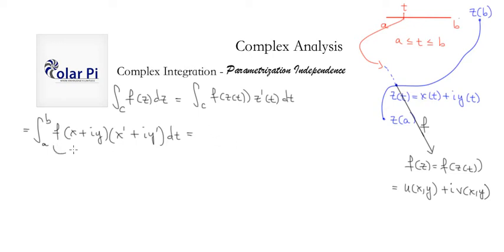Now, remember, f maps z of t, which is x plus i y, onto u of x y plus i times v of x y. So that's all to say that we could replace this with, we could replace f of x plus i y with u plus i v. Where u and v are functions of x and y. So this could be replaced with u plus i v. So we could do that. A to b. And then u plus i v. And then times x prime plus i y prime times dt.